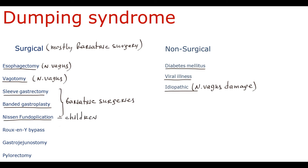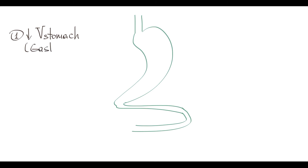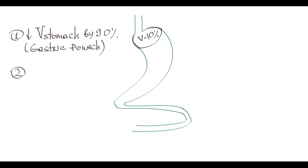Roux-en-Y gastric bypass surgery is by far the most popular bariatric surgery. The specific feature of this surgery is a combination of restricted gastric volume to provoke a sense of satiety with a minimal quantity of food, and also malabsorption, because decreasing absorption stimulates weight loss even further. To explain the principles: there is the esophagus, stomach, duodenum, and jejunum. The first step is to reduce gastric volume by formation of a gastric pouch, the volume of which equals 10% of the initial stomach volume — a reduction of 90%.